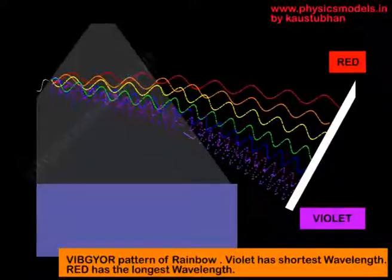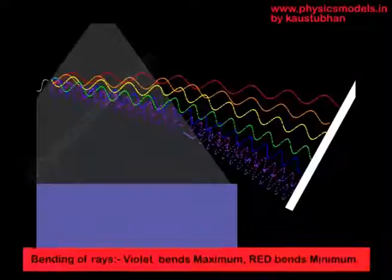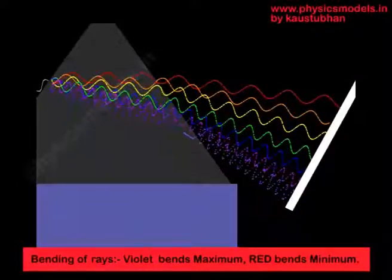...indigo, blue, green, yellow, orange and red. So this is how the refraction takes place. In terms of wavelength you can see that red is the longest one, the violet right below has got the shortest wavelength.